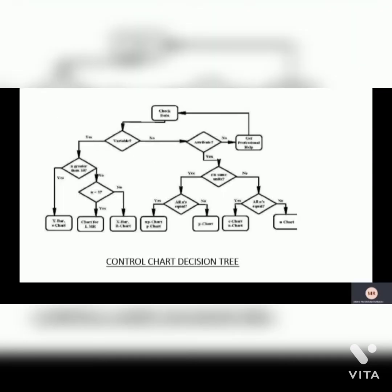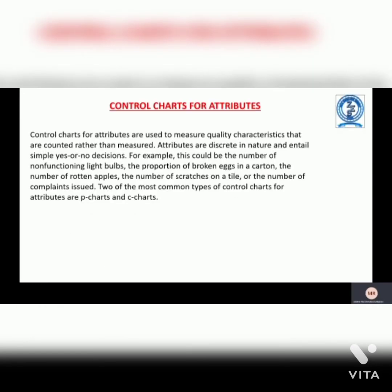This is the decision tree of the control chart. Control charts for attributes are used to measure quality characteristics that are counted rather than measured. Attributes are discrete in nature and entail simple yes or no decisions. For example, this could be the number of non-functioning light bulbs, the proportion of broken eggs in a carton, the number of rotten apples, the number of scratches on a tile, or the number of complaints issued. Two of the most common types of control charts for attributes are P charts and C charts.